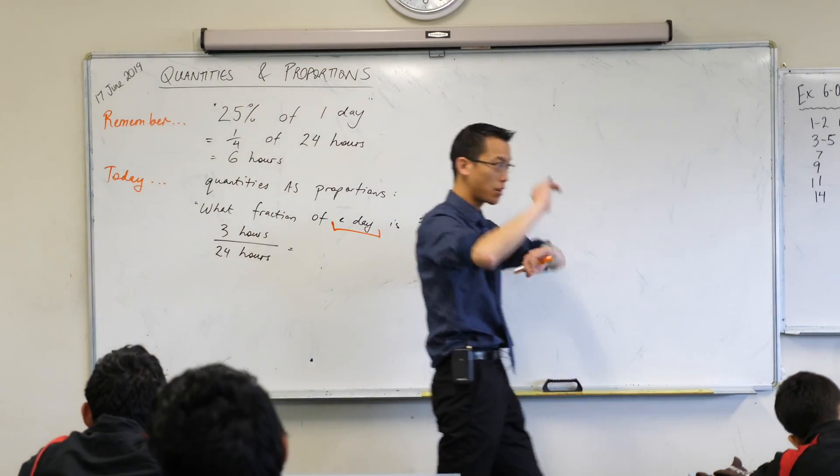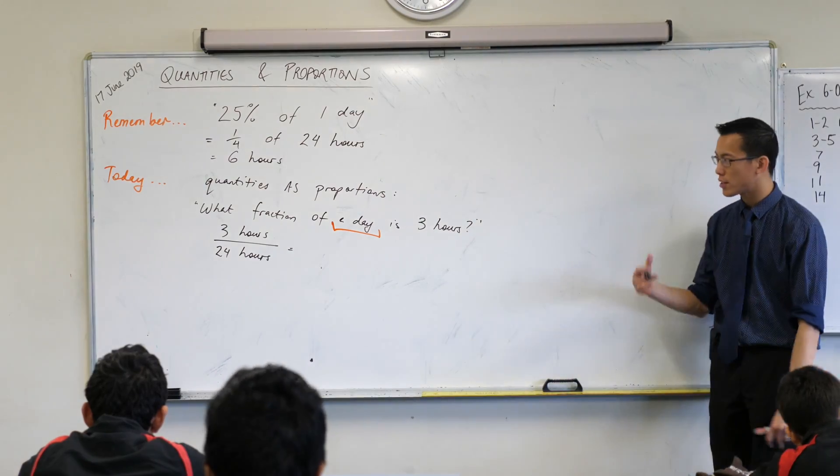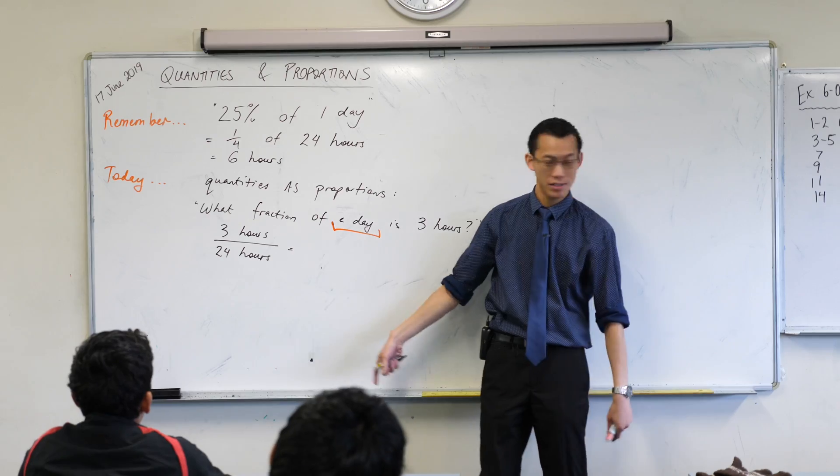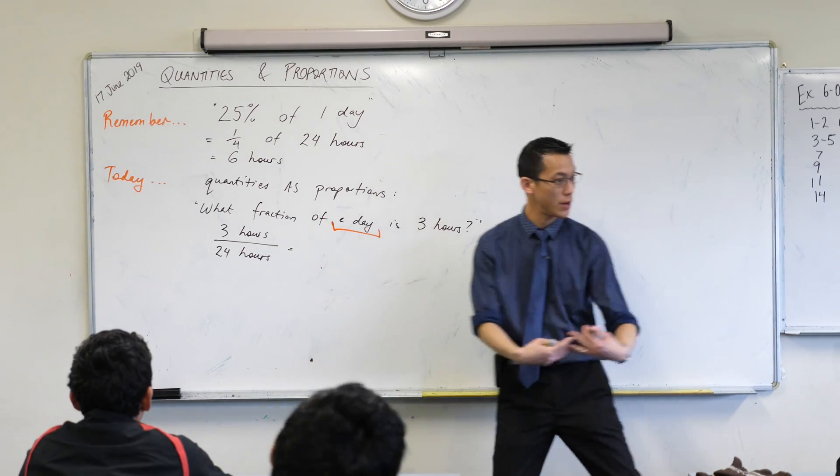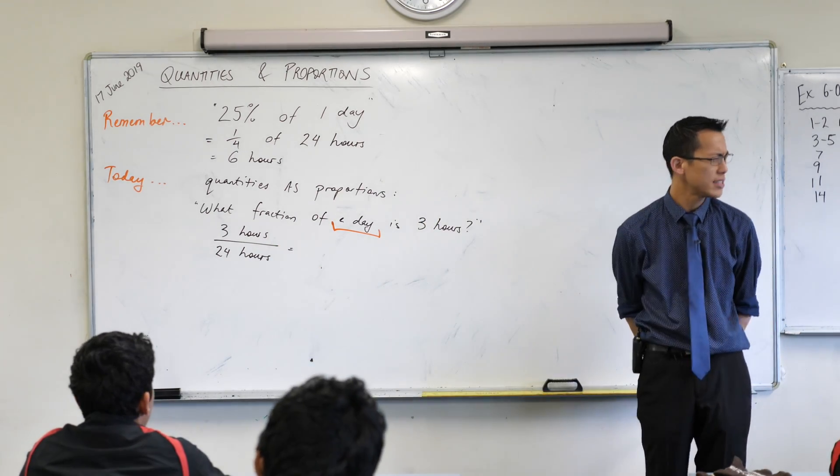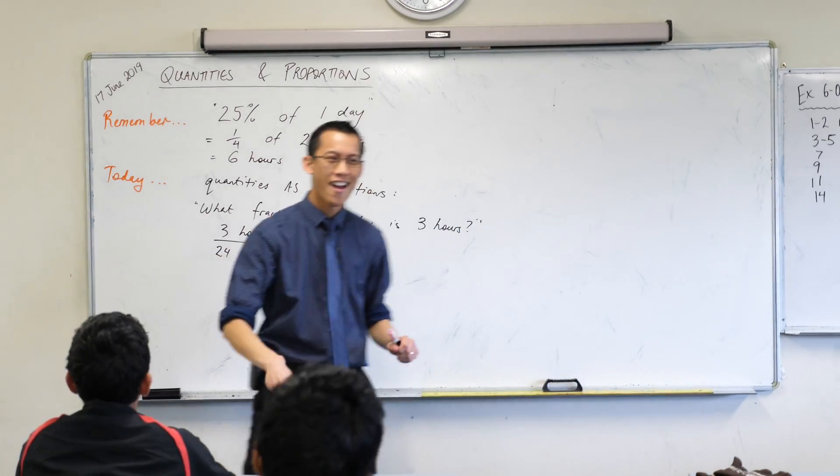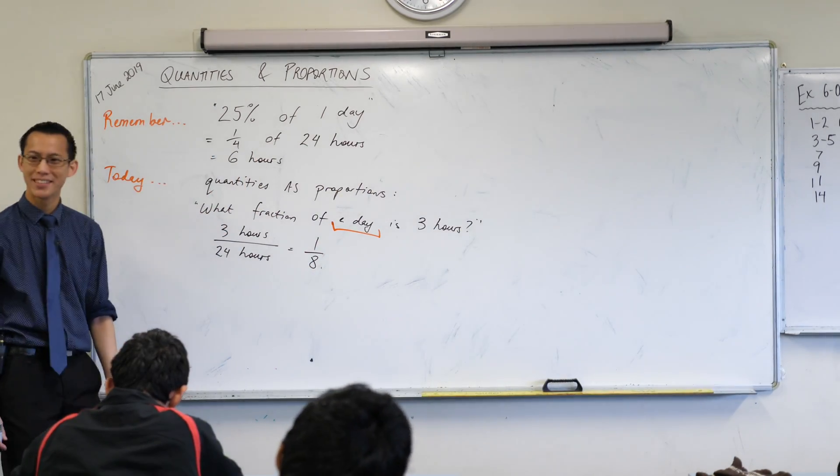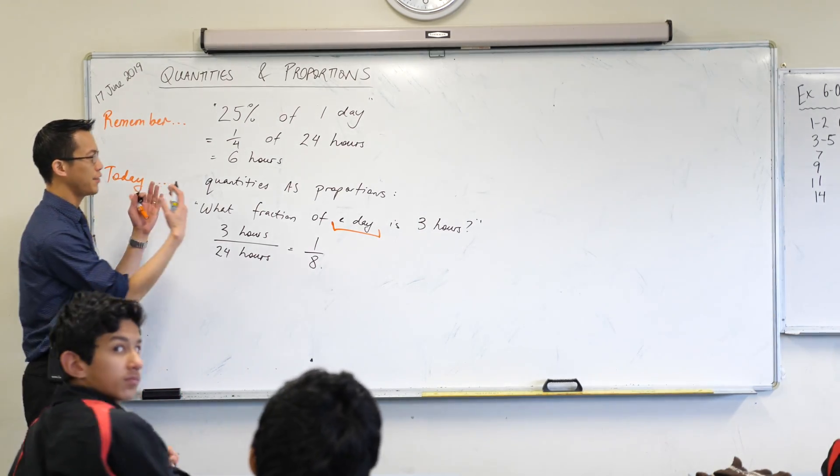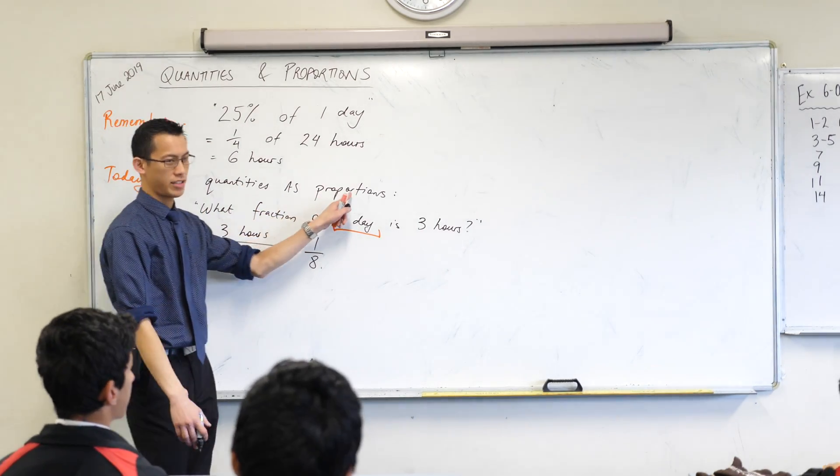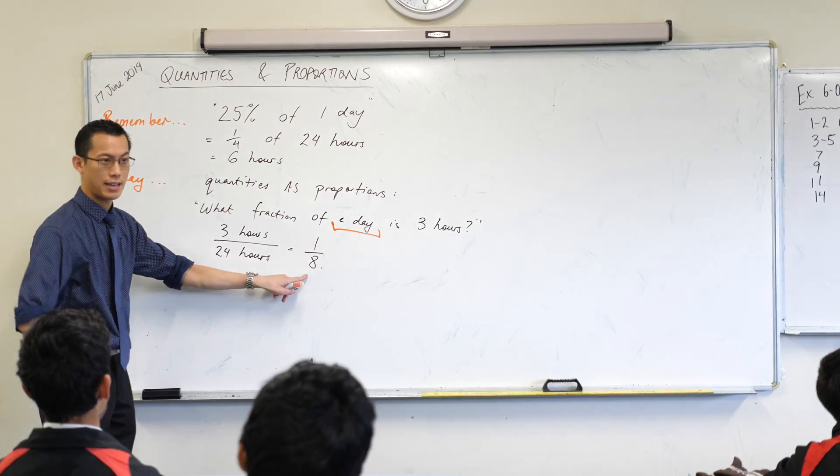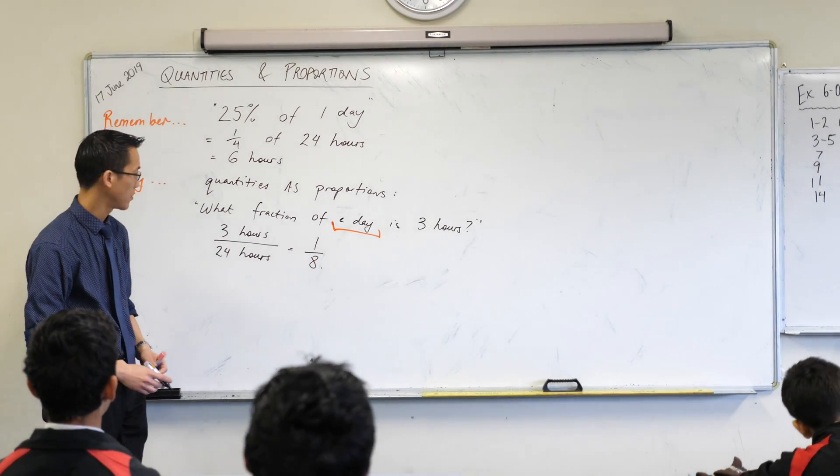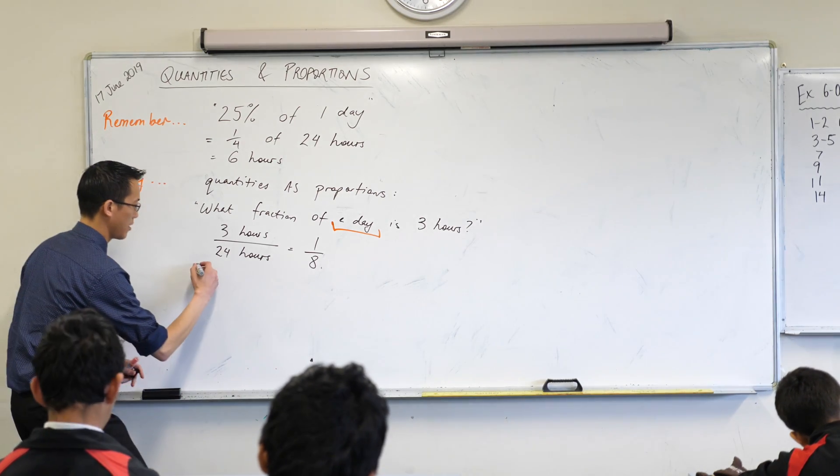Now, you can see here on the top and the bottom, my numerator and my denominator, I've got the same unit here. Hours with hours. So they're, in fact, just like with normal fractions. You can cancel them. You get three over 24. Can I write it any simpler than three over 24? One eighth. One eighth. Perfect. So you can see here, because we are given a quantity and we're asked to proportion in the end, it's not an eighth of an hour or an eighth of a day. It's just one eighth. That's the fraction. Okay.